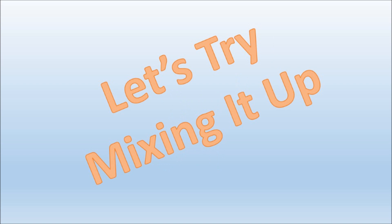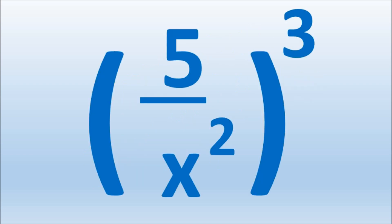Let's try mixing it up. Here is 5 over x squared, all raised to the third power. To solve, we multiply every exponent within the parentheses by 3.